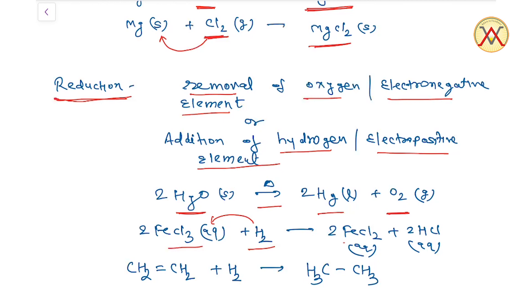Third Example: CH₂=CH₂ + H₂ gives CH₃CH₃ - यह भी example हो गया Addition of Hydrogen का। Thank You।